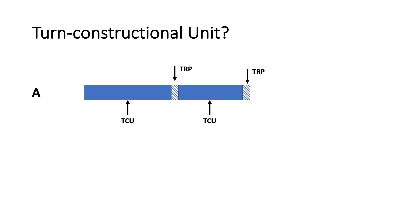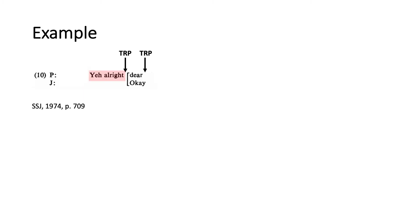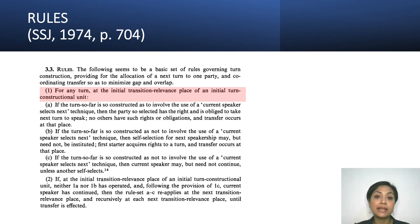If we incorporate TRP's explanation into TCU's explanation, TCU is any unit where at the end of it a speaker change may occur, but need not. Again, the emphasis here is the word 'may.' In my interpretation, TCU is where the current speaker builds or constructs the momentum for TRP — hence it's called Turn Constructional Unit. Returning to the previous example of P and J's talk, 'yeah' or 'alright' is a TCU, 'dear' is another TCU, and together 'yeah or alright dear' is also a TCU.